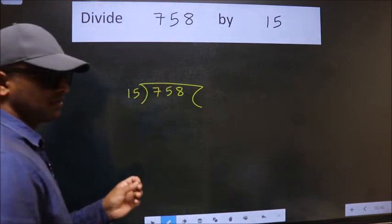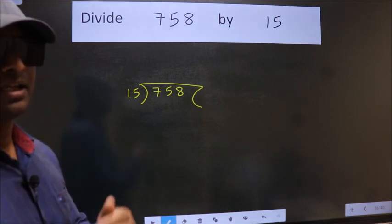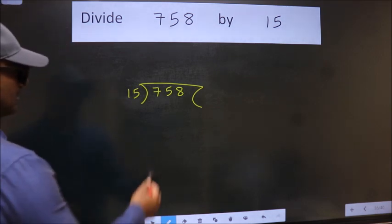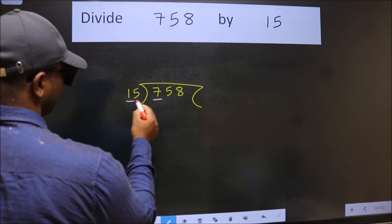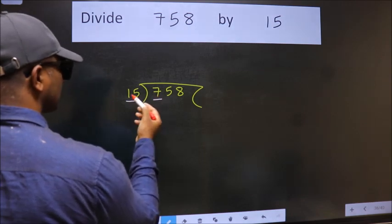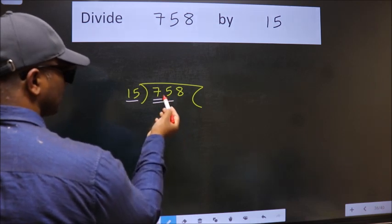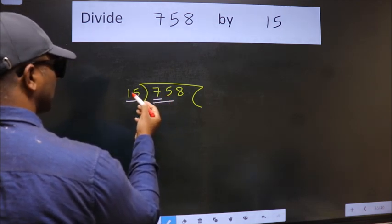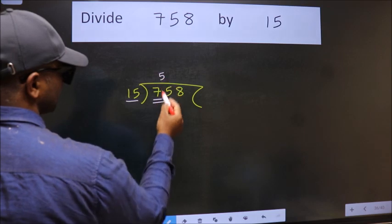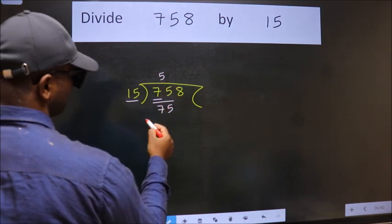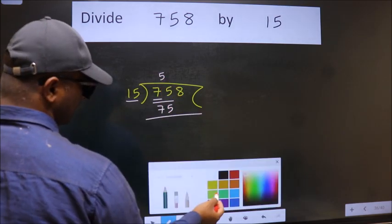This is your step one. Next, here we have 7, here 15. 7 is smaller than 15, so we should take two numbers: 75. When do we get 75 in 15 table? 15 fives 75. Now we should subtract, we get zero.